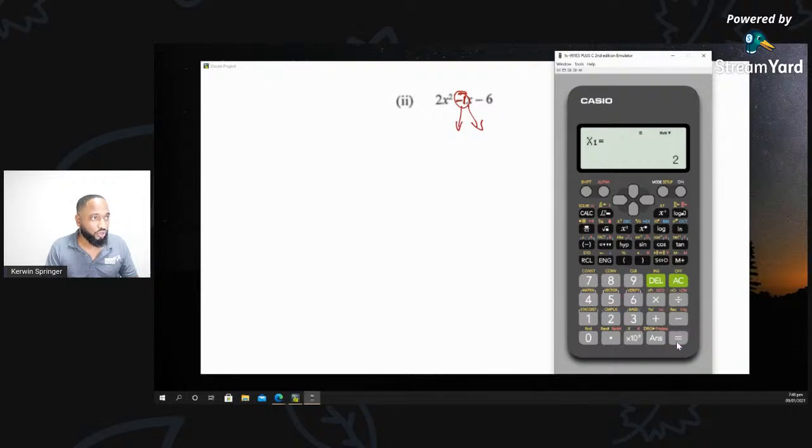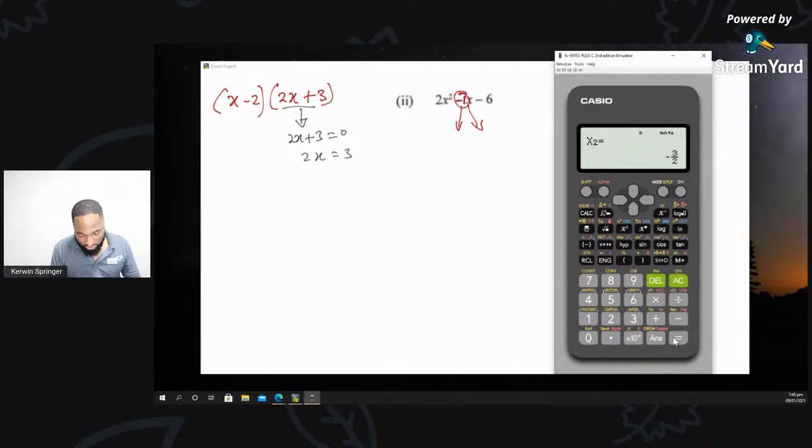So you get x is 2. If x is 2, the factor is x minus 2. And x is negative 3/2. If that's the case, the factor is 2x + 3. The reason I got that, because if I equate this down to 0, 2x + 3 equals 0, 2x is equal to negative 3, x is equal to negative 3/2. So your calculator can make you see the answer before you factorize. Now we just want to get a little extra mark for working.